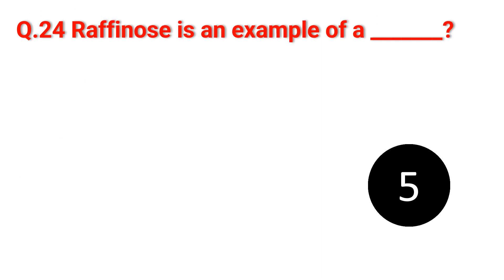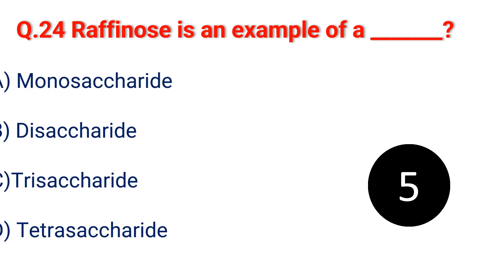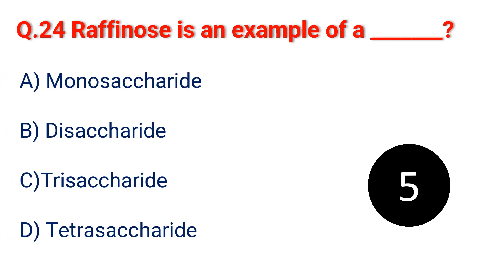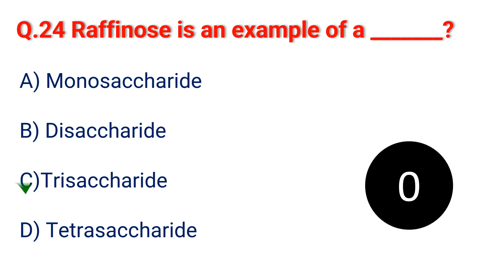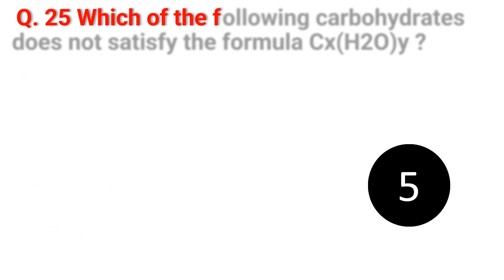Question 24. Raffinose is an example of: A. Monosaccharide. B. Disaccharide. C. Trisaccharide. D. Tetrasaccharide. The answer is C. Trisaccharide.